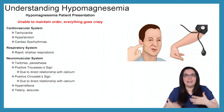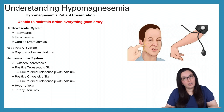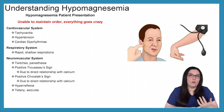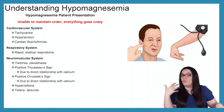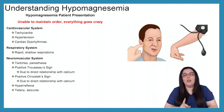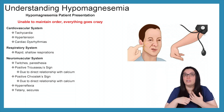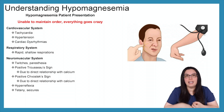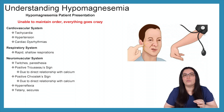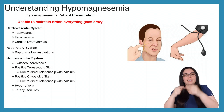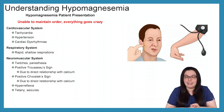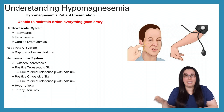With hypomagnesemia patients, everything is going to go haywire. In the cardiovascular system, we're going to see tachycardia, hypertension, and cardiac dysrhythmias. Specifically, hypomagnesemia can cause torsades de pointes, a type of ventricular tachycardia with a spindling appearance. We want to give magnesium to help correct that specific cardiac dysrhythmia.